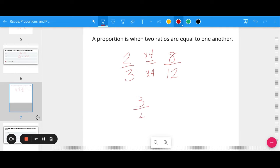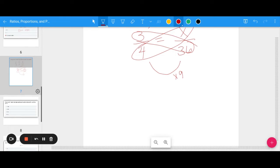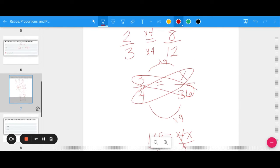Say I had 3 fourths equals something over 36. How could I solve that? There's a few different ways. If you know you have to do 4 times 9 to get 36, you could do 3 times 9 to find x. Or you could cross multiply: 3 times 36 equals 4x. So 3 times 36 is 108 equals 4x. Divide by 4, and 108 divided by 4 is 27. Either way, you should get 27.